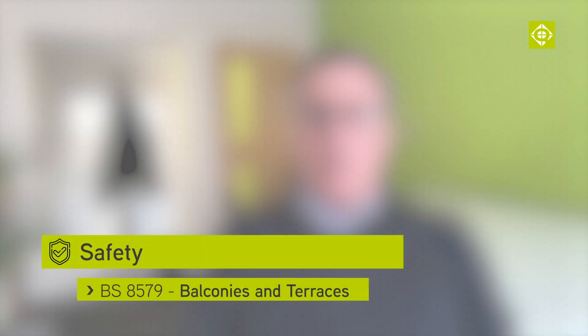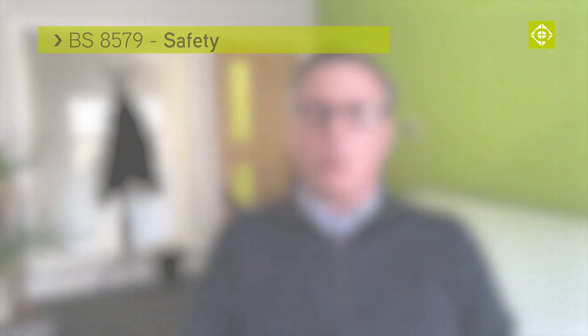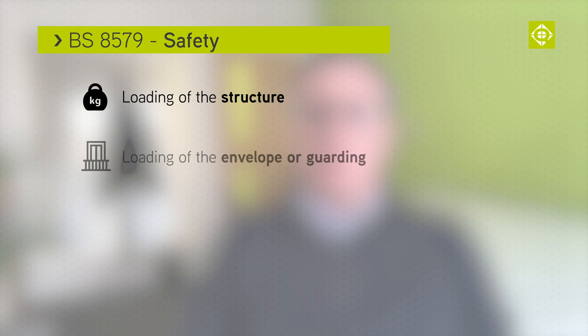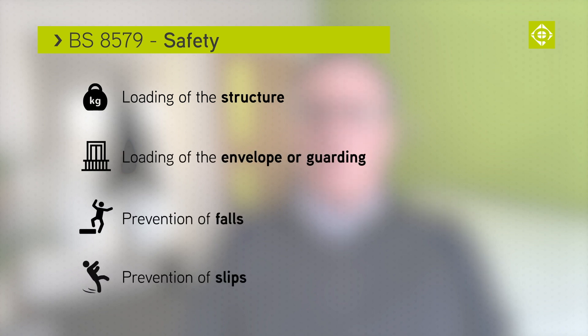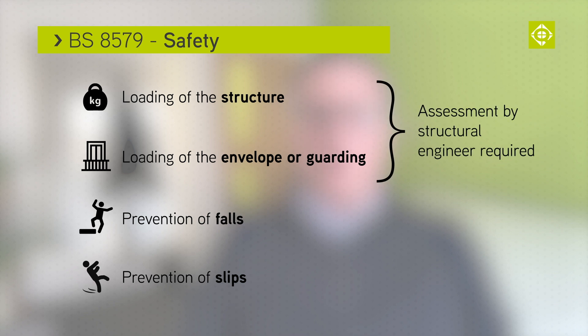Safety. This can be broken down into four categories: loading of the structure, loading of the envelope or guarding, prevention of falls, and prevention of slips. The first two of these criteria should be dealt with by a competent structural engineer, but let's have a look at prevention of falls.